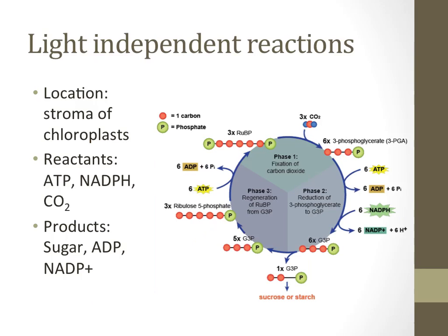The light-independent reactions, also referred to as the Calvin cycle, does not require light to function. This process occurs in the stroma, or the liquid portion within chloroplast that surrounds all of the other structures.